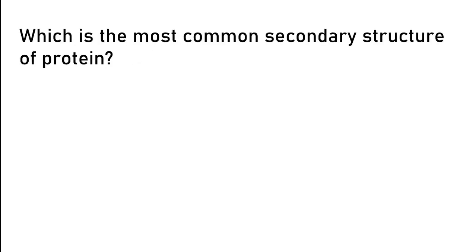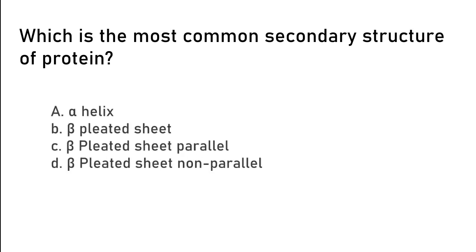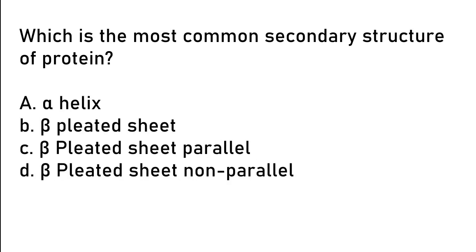What is the most common secondary structure of protein? Alpha helix, beta pleated sheet, beta pleated sheet parallel, beta pleated sheet anti-parallel. So the correct answer is option A. Alpha helix.